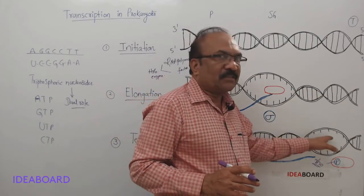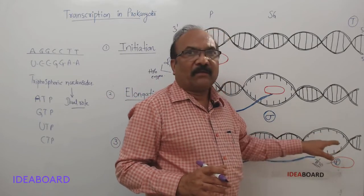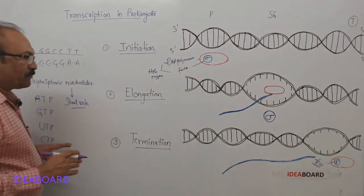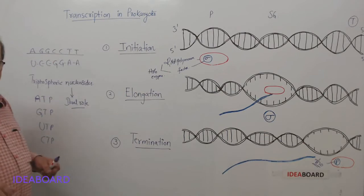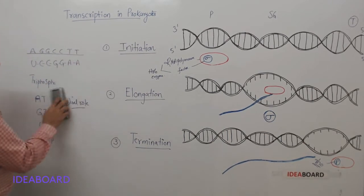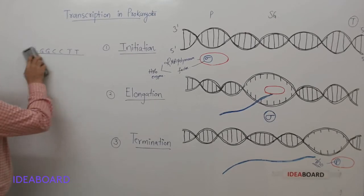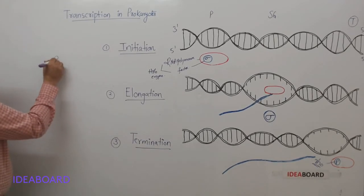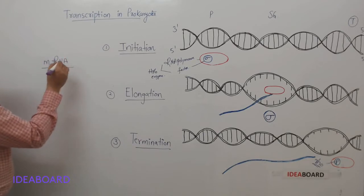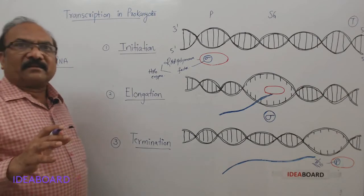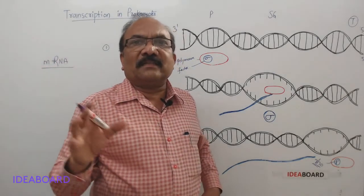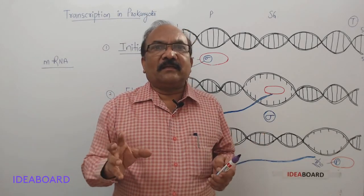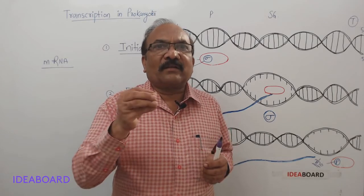Once the core enzyme has reached the terminator site, it is associated with the rho factor, and as a result it is terminated and the RNA is released. One important point: the RNA which is released is mRNA. In prokaryotes, mRNA is directly formed — post-transcriptional processing is not at all required in prokaryotes, because the DNA in prokaryotes does not have intronic information.